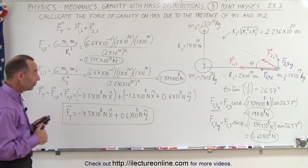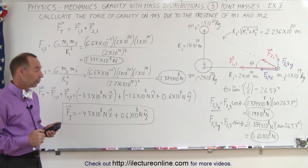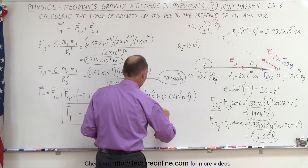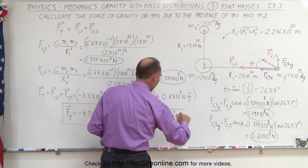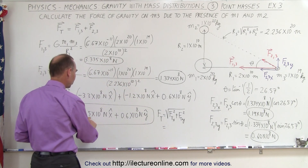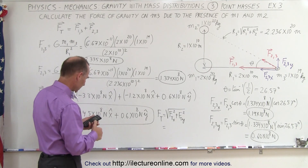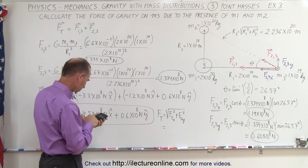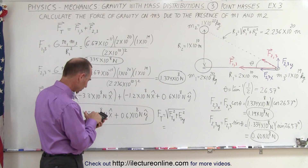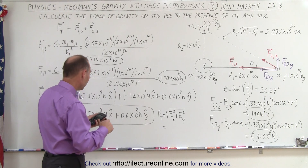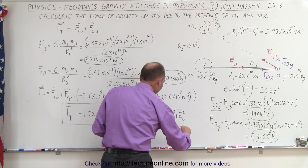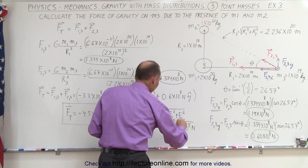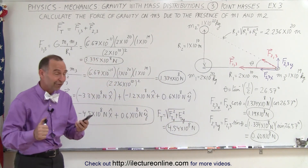Now we're not quite done yet, because we may want to know the magnitude of that force. Using the Pythagorean theorem, the total force equals the square root of the x component squared plus the y component squared. So we get the square root of 4.5 squared plus 0.6 squared, which equals 4.54 times 10 to the 8 Newtons. Notice that the y component is so small compared to the x component that it doesn't make a lot of difference in the total.